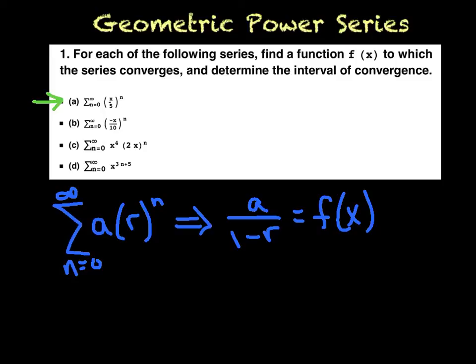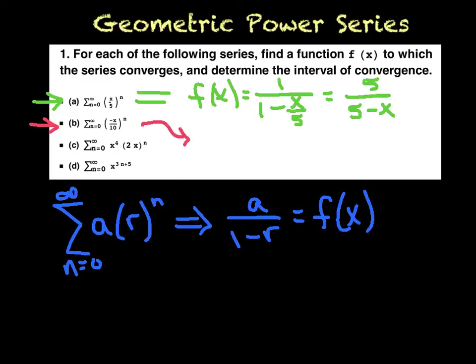So as I look at my first one up here, part a, I've recognized that the a value is 1 and my r value is x over 5. So that particular series is equal to f of x as a function, a over 1 minus r. And then probably just to clean it up, make it look a little tidier, we'll multiply each term by 5 to make it look a little cleaner. And that's the function that the given series converges to. Let's see. I'll do b right here. That function would be 1 over 1 plus x over 10, because we have the double negatives. And again, we'll just kind of clean it up a little bit, multiply everything by 10.